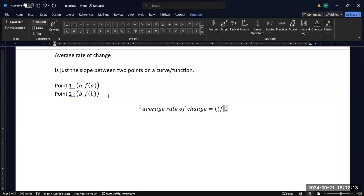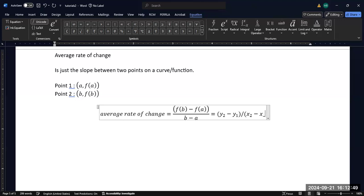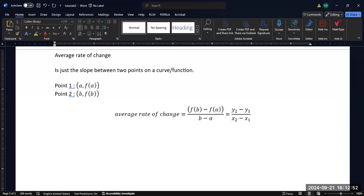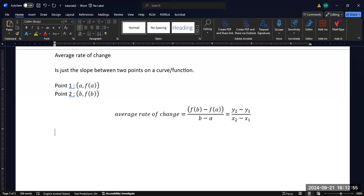It is f(b) minus f(a), so it's the y coordinate of our second point minus the y coordinate of our first point, divided by the x coordinate of our second point minus the x coordinate of our first point. This is literally just y2 minus y1 divided by x2 minus x1. It's just that the average rate of change formula is typically given in function notation instead of coordinate form notation.